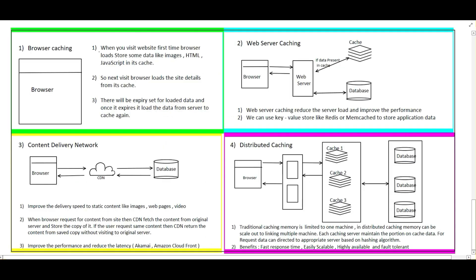The first type of caching is browser caching. Whenever the browser requests a website for the first time, the browser loads some HTML, images, or JavaScript into its cache. When the user requests the same content a second time, it loads from the cache itself without hitting the web server. When the browser stores data in the cache, it sets an expiry time — like 30 seconds. Within that 30 seconds, if the same data is requested, it is read from the cache. Once the expiry is past, it retrieves fresh data from the website and stores it in the cache again.